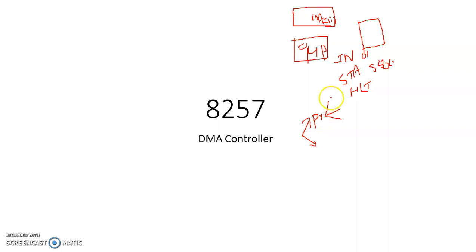The first category is synchronous data transfer. This happens when the source and destination connected by means of a data transfer are synchronized to the same clock — that happens to be the clock of the microprocessor.